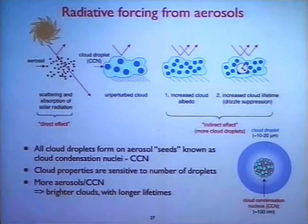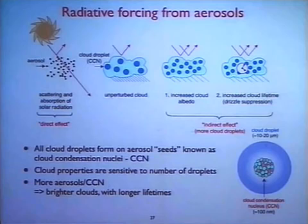That's one aspect. The second aspect is that it actually rains out more slowly. Clouds rain out because droplets start to coalesce when they get big enough by gravitation and then drop out. If you spread that out over more droplets, the cloud will stay longer.